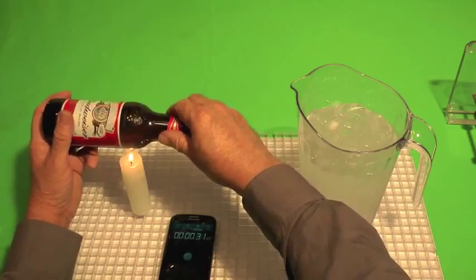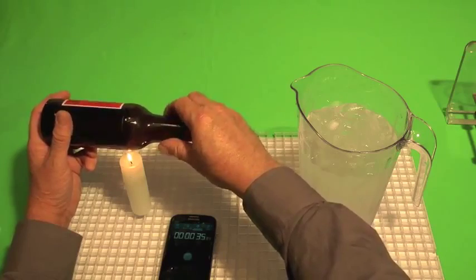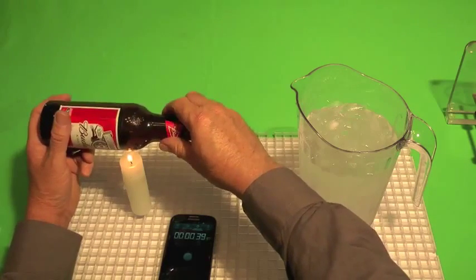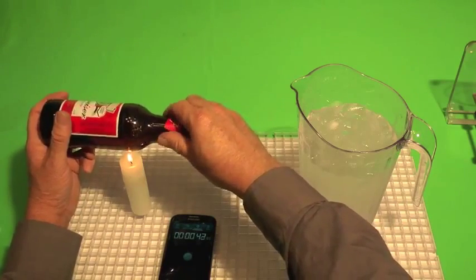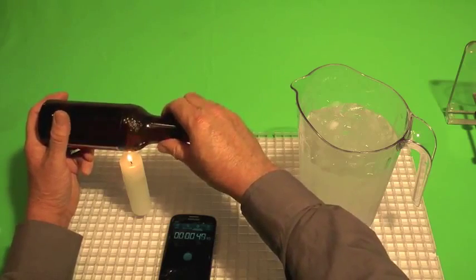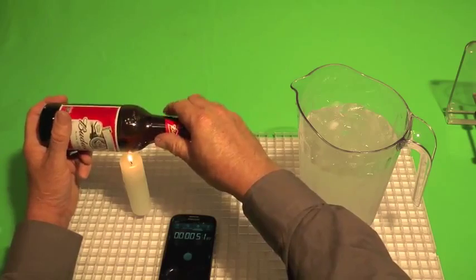A beer bottle takes about a minute and 30 seconds. A small wine bottle takes about two minutes to two and a half minutes. A larger wine bottle takes two and a half minutes to three minutes. Your thicker glass, like a champagne bottle, could take three and a half minutes to four and a half minutes of turning it on the flame.